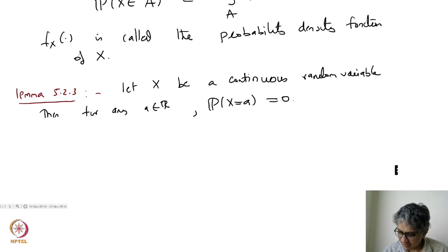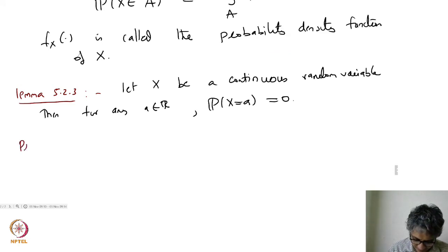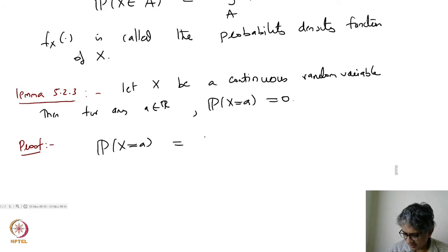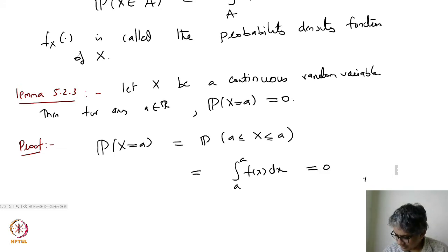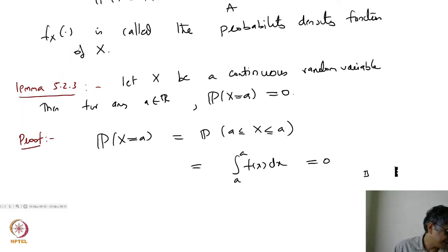Let us do a proof. Here we have: probability that X equals a can be thought of as probability that a ≤ X ≤ a, and that is the same as the integral from a to a of f(x) dx, which is just 0. So that is a simple result — a continuous random variable gives zero probability to singleton points, and that is the characteristic of a continuous random variable.